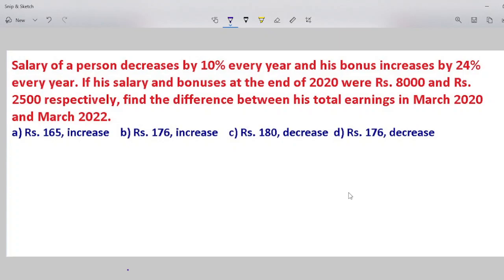If his salary and bonuses at the end of 2020 were rupees 8000 and rupees 2500 respectively, find the difference between his total earnings in March 2020 and March 2022.